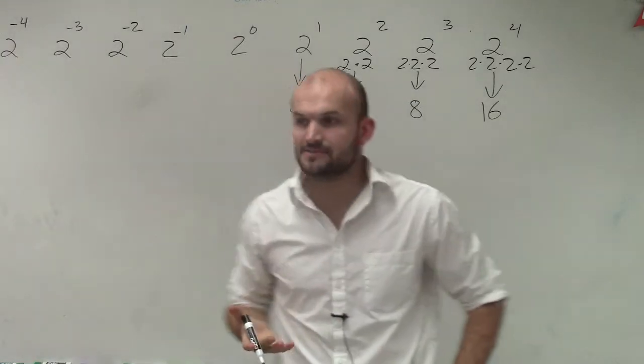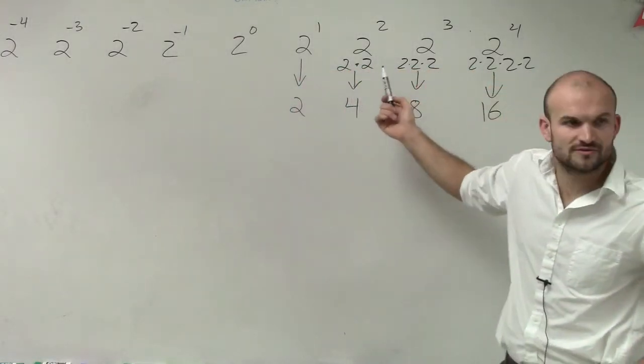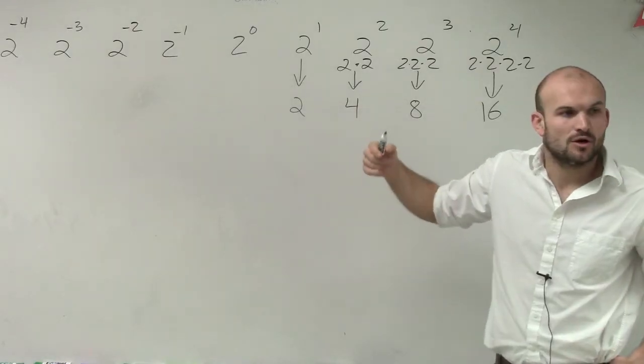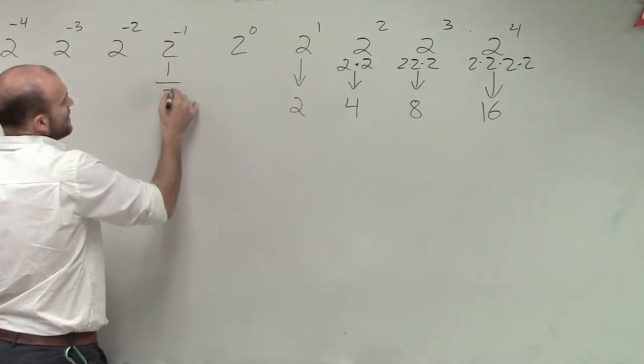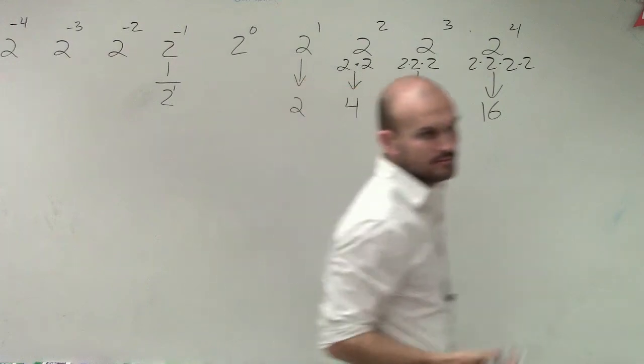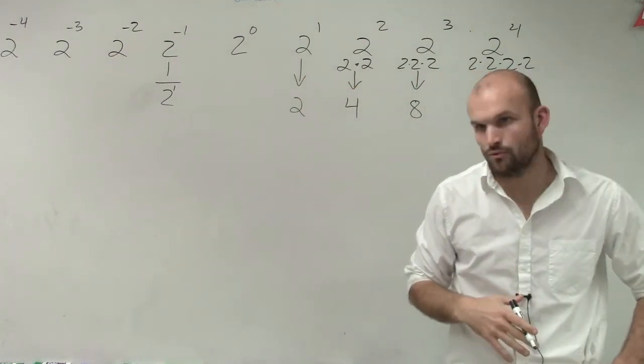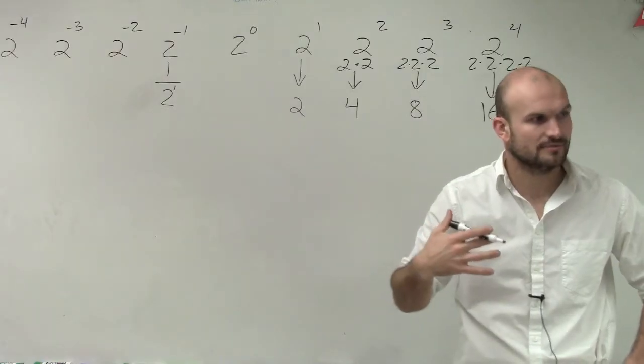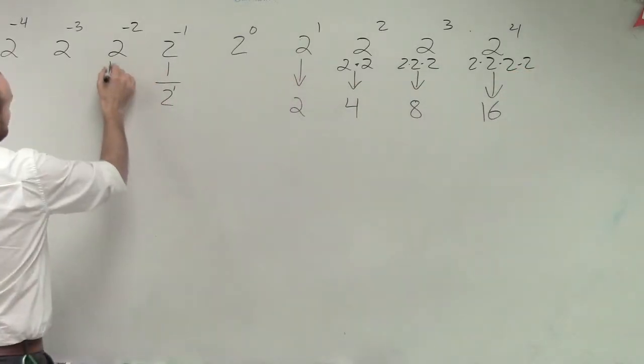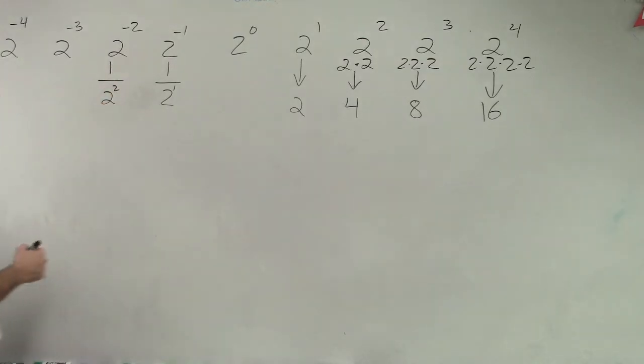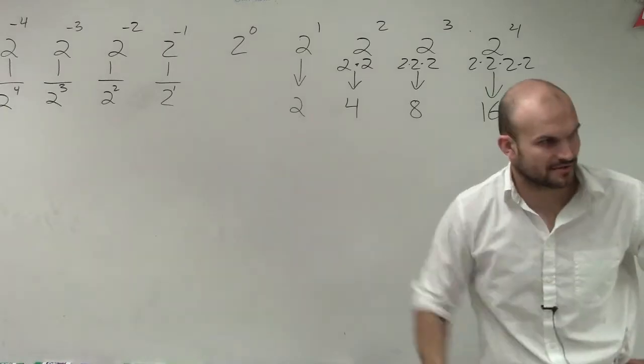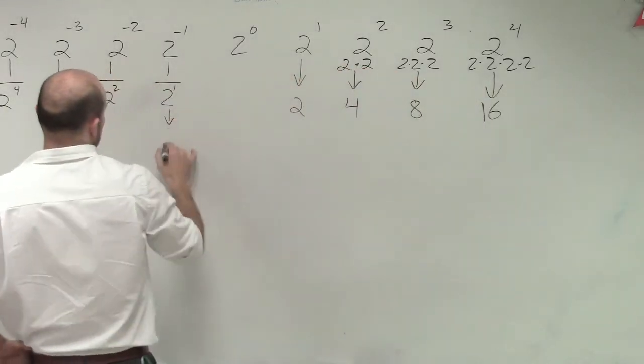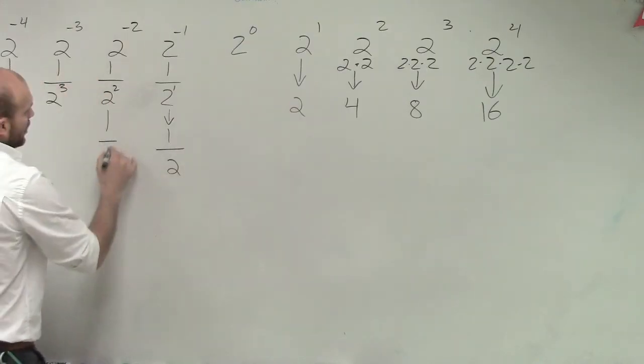When we have negative exponents, rather than multiplying by itself, we're essentially dividing. 2 to the negative first power means 1 divided by 2 to the first power. We put it in the denominator to make it positive. 2 to the negative second would be 1 over 2 squared. So this is really 1 over 2, then 1 over 4.